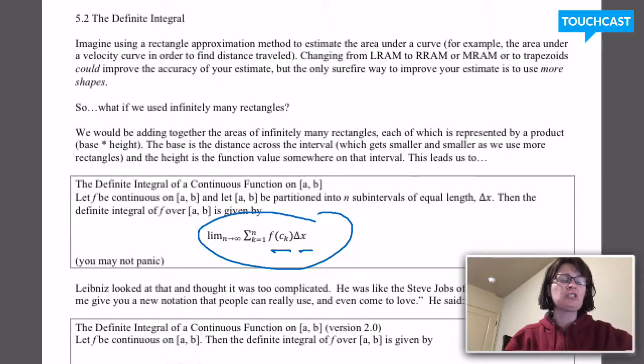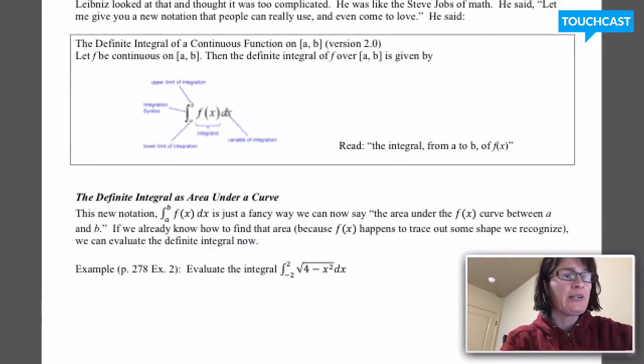So that's what this notation means, it says, add up the areas of infinitely many rectangles. So this is exactly what we want to do, it's just the founders of calculus looked at that and said, okay, we need something that's more usable. So Leibniz is credited with writing a new, using a new notation for the definite integral. So this is the notation he created, this is the notation we're going to use.